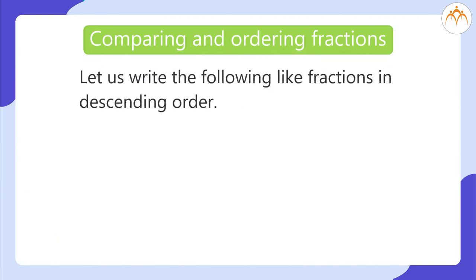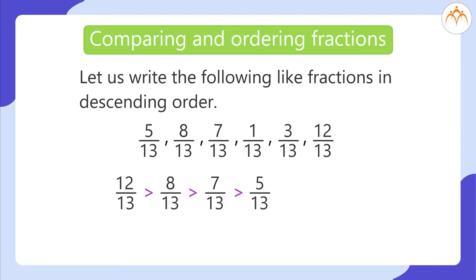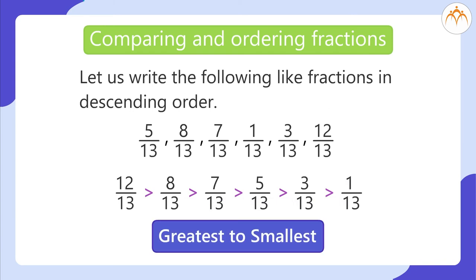Let us write the following like fractions in descending order: 5/13, 8/13, 7/13, 1/13, 3/13, 12/13. The descending order is: 12/13 > 8/13 > 7/13 > 5/13 > 3/13 > 1/13.